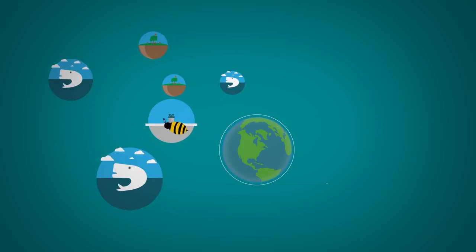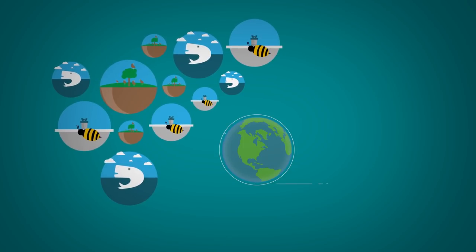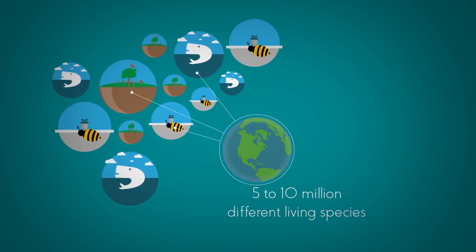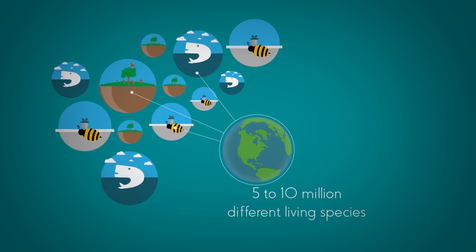But the amazing diversity of life on planet Earth is truly staggering. There are estimated to be between 5 to 10 million different living species on the Earth. And that's excluding all the bacteria, as they are really hard to count.